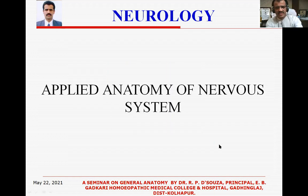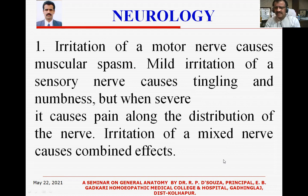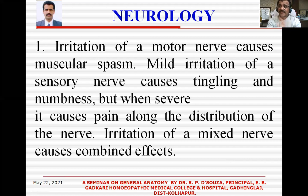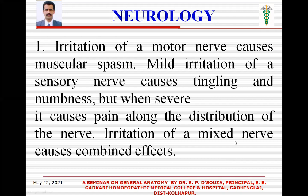That was all about the autonomic nervous system. Now I will finish the applied anatomy of the nervous system. Nervous system diseases are many, but we will highlight a few of interest. When you pass first BHMS and go on to second year pathology, third year surgery, and final year medicine, you will have to study neurology in much more detail because there are many neurological diseases encountered in day-to-day practice.